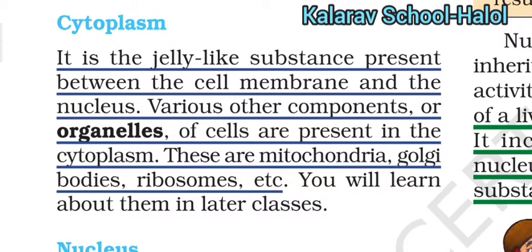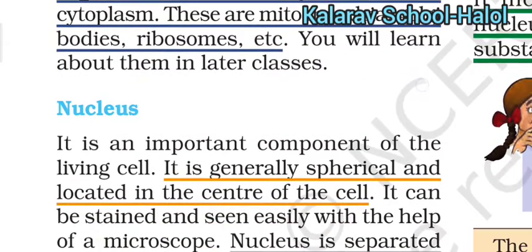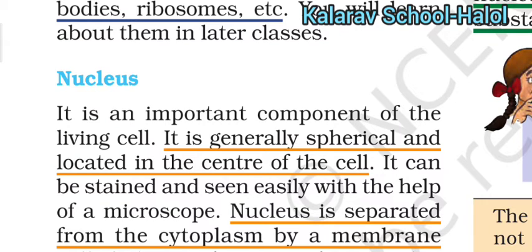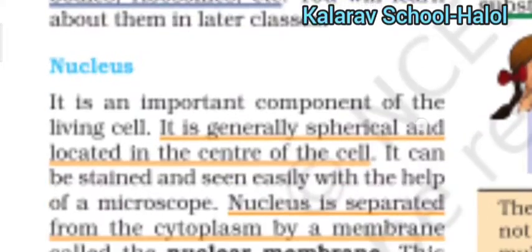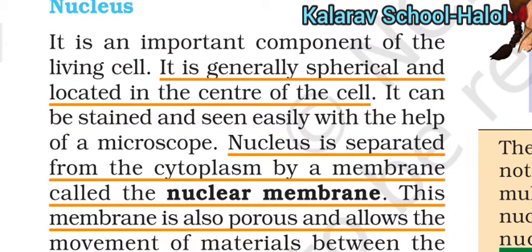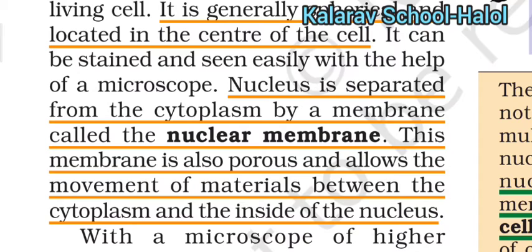The organelles include mitochondria, Golgi bodies, ribosomes, etc. You will study these different types of organelles in higher classes. The nucleus is an important component of the living cell — it is spherical and located in the center of the cell. The nucleus is separated from the cytoplasm by a membrane called the nuclear membrane. That nuclear membrane is also porous, like the plasma membrane, allowing the movement of material between the cytoplasm and inside the nucleus.